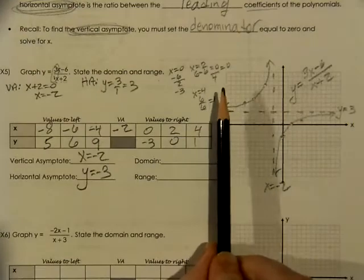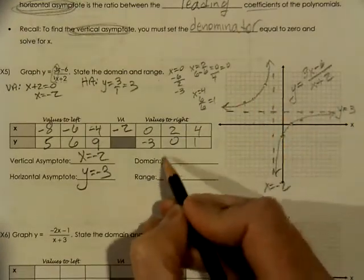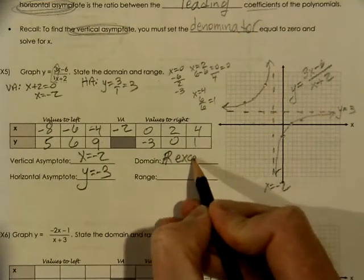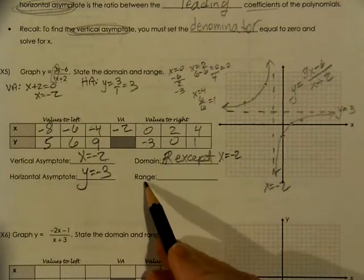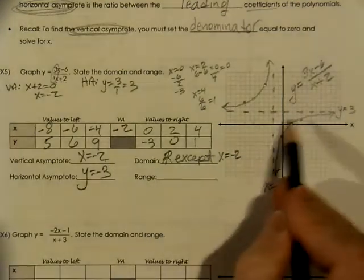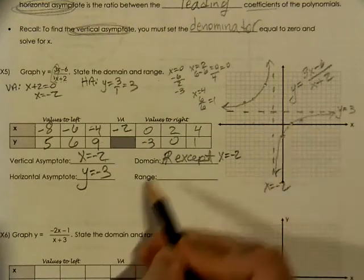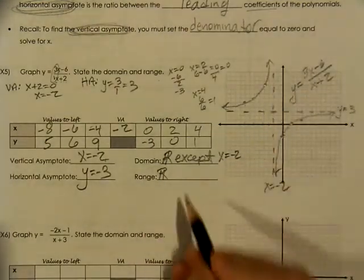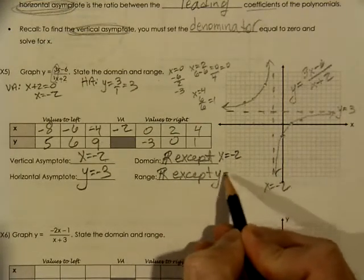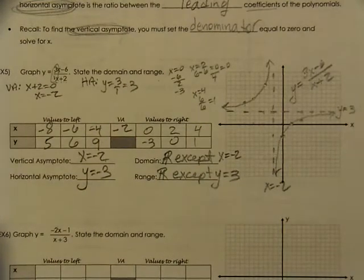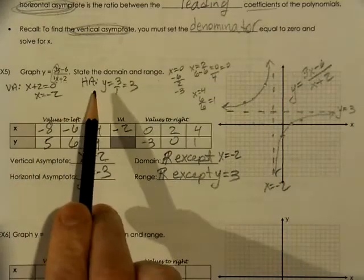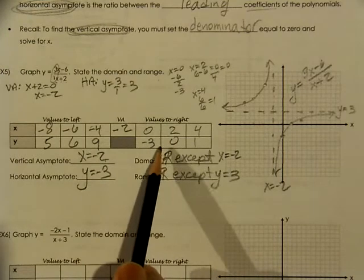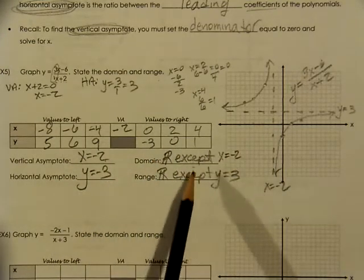For the domain — the x values appropriate to use — we could use any numbers except the asymptote, which is x equals negative two. For the range, what y values can you get? The graph exists all the way down and going up, approaching but never reaching three. So y is all real numbers except three.